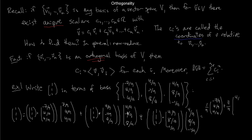You get 1/9 for the first coordinate, 11/9 for the second, and 11/9 for the third. So (1,1,1) = (1/9) times the first basis vector plus (11/9) times the second plus (11/9) times the third. If you didn't know the basis was orthogonal, you'd have to put the basis vectors as columns of a matrix, augment with (1,1,1), and row-reduce — considerably more work.